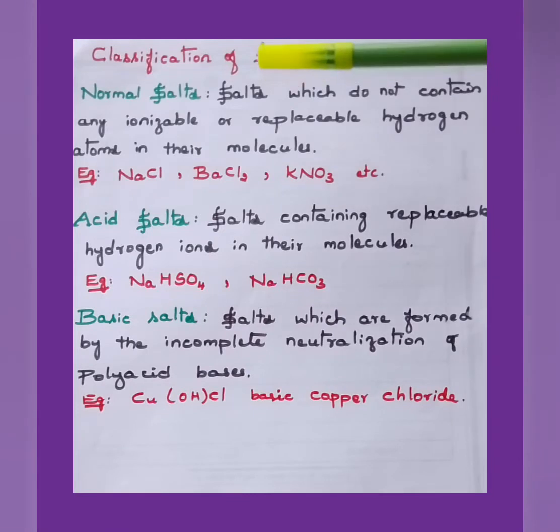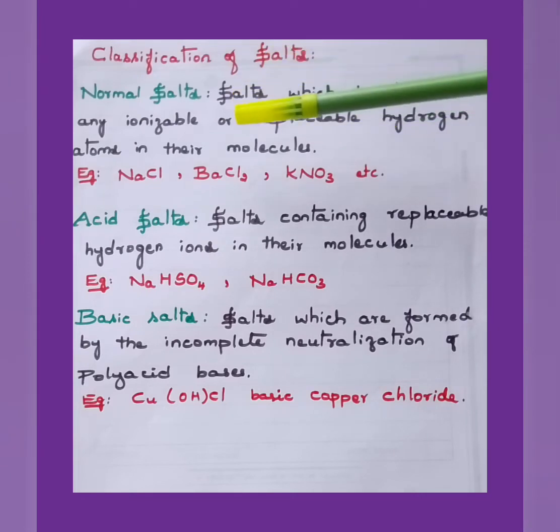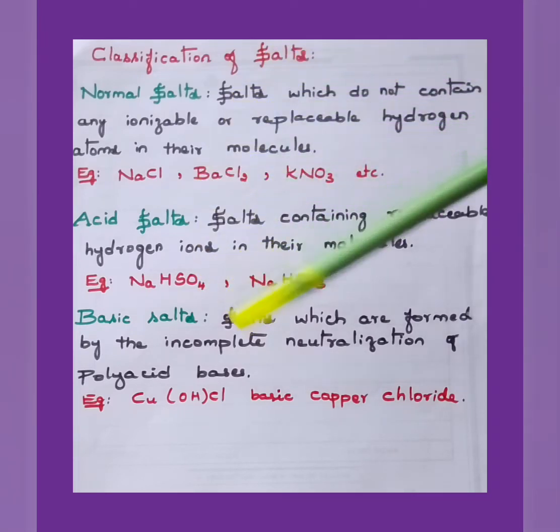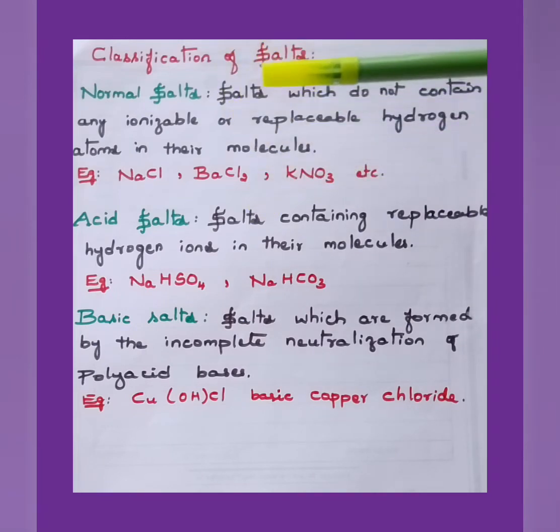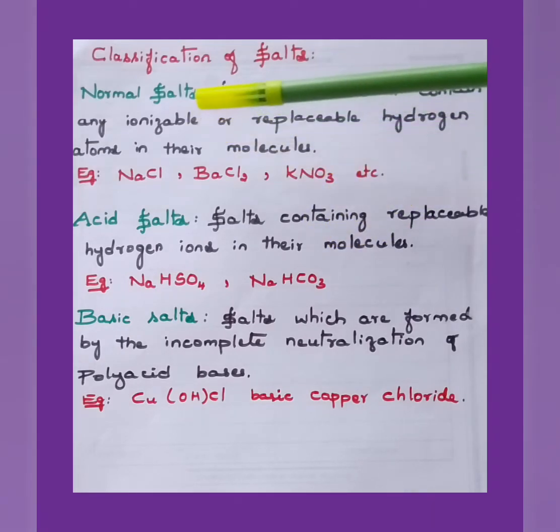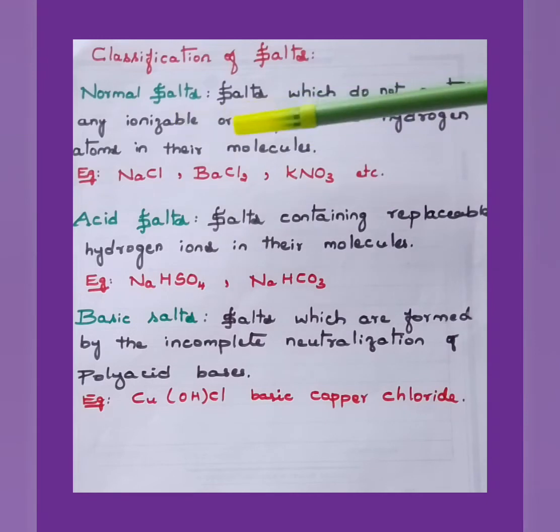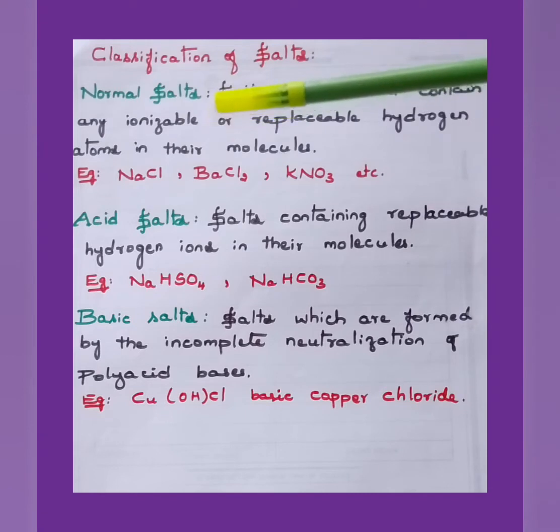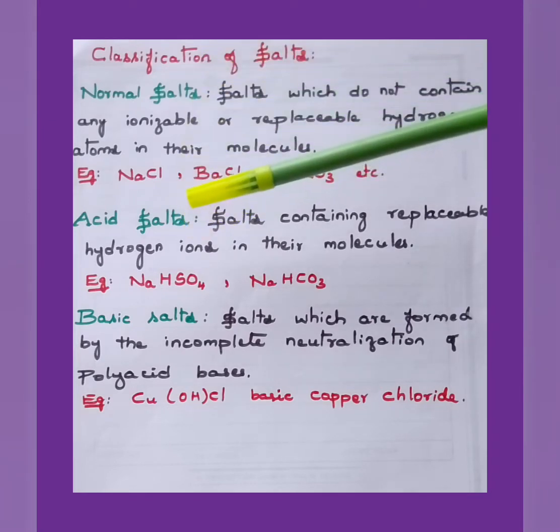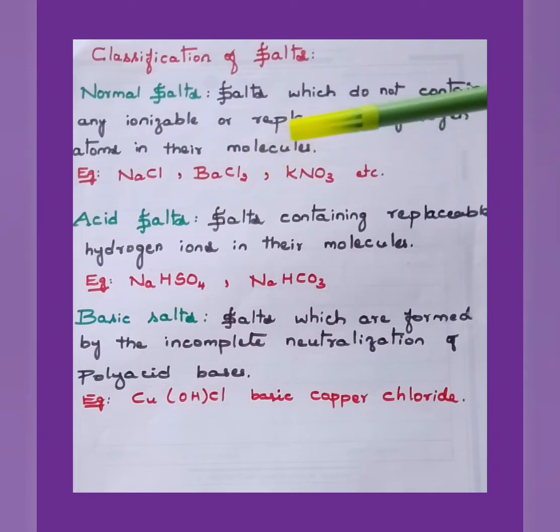As we are moving to the classification of salts, normally salts are classified into three types: normal salts, acid salts and basic salts. Other than this, based on the solubility, they are classified as soluble salts and insoluble ones. Normal salts are salts which do not contain any ionizable or replaceable hydrogen atom in their molecule. For example, NaCl sodium chloride, BaCl2 barium chloride, and KNO3 potassium nitrate.